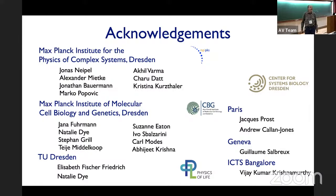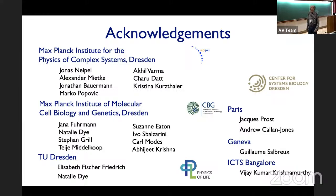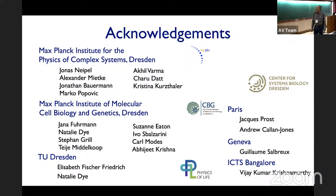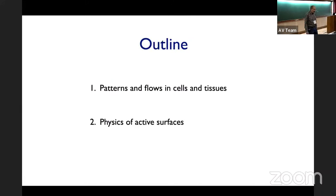In Dresden, we have an intense collaboration between two Max Planck Institutes: our institute, the MPI for the Physics of Complex Systems, and the MPI of Molecular Cell Biology and Genetics. We've built a joint research program bridging between physics and biology, created a center for systems biology, and together with the university established the Master of Excellence Physics of Life. We've been interested in active surfaces in collaboration with Nium Salbro, Stefan Grill, Alexander Mietke, Jonas Neipel, Akhil Varma, and Vijay.